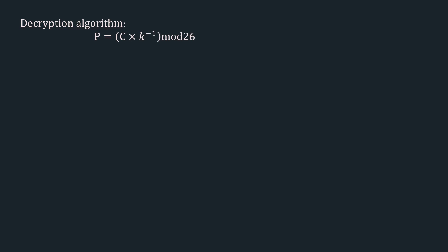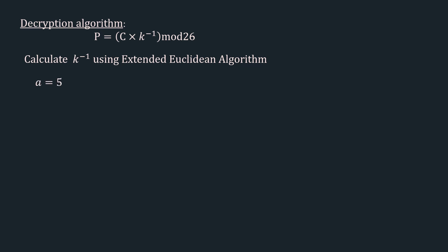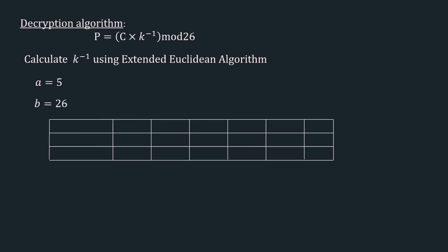Now let's decrypt it. The decryption algorithm is p = c × k⁻¹ mod 26. We require k⁻¹, the multiplicative inverse of k, calculated using the extended Euclidean algorithm. Here a = 5 (the value of k) and b = 26. We construct a table with columns q, a1, a2, a3, b1, b2, b3. Initial values: q = null; a1 = 1, a2 = 0, a3 = 26; b1 = 0, b2 = 1, b3 = 5.